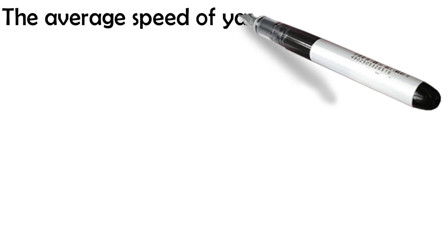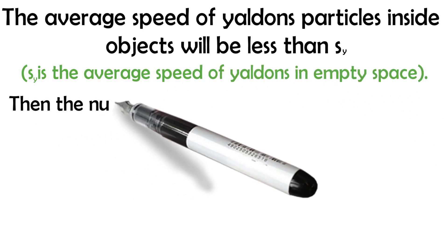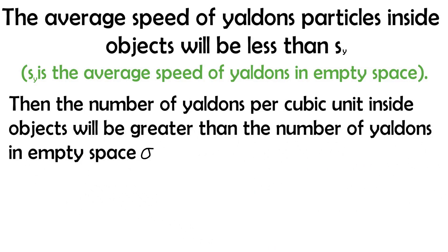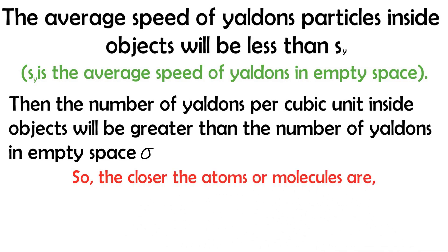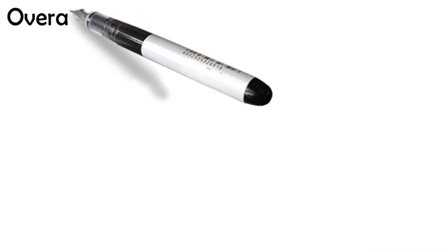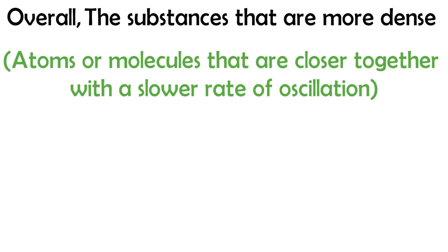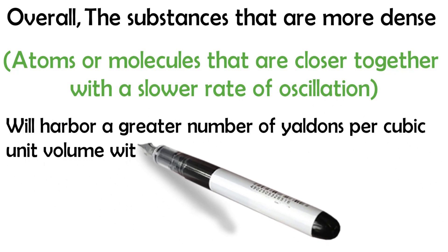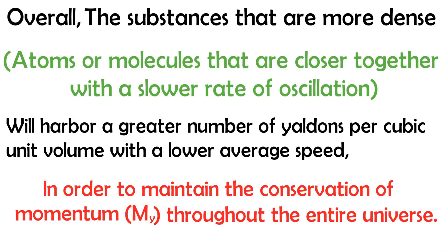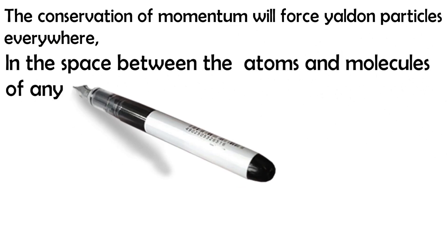The average speed of Yaldon particles inside objects will be less than SY, the average speed of Yaldons in empty space. Then the number of Yaldons per cubic unit inside objects will be greater than in empty space. The closer the atoms or molecules are, the greater the number of Yaldons per cubic unit will become. Denser substances will harbor a greater number of Yaldons per cubic unit with a lower average speed, in order to maintain conservation of momentum throughout the entire universe.